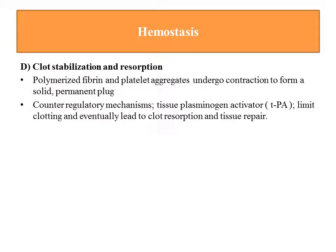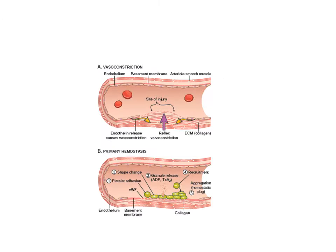This is the normal process of how hemostasis occurs. You can see this from these diagrams, which are from your book Robbins.